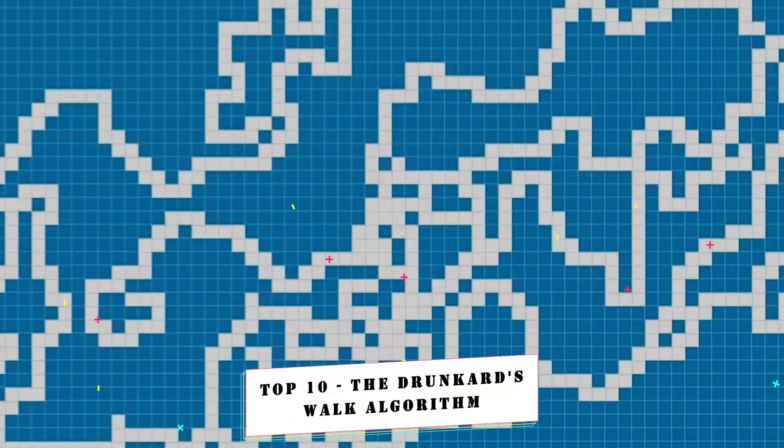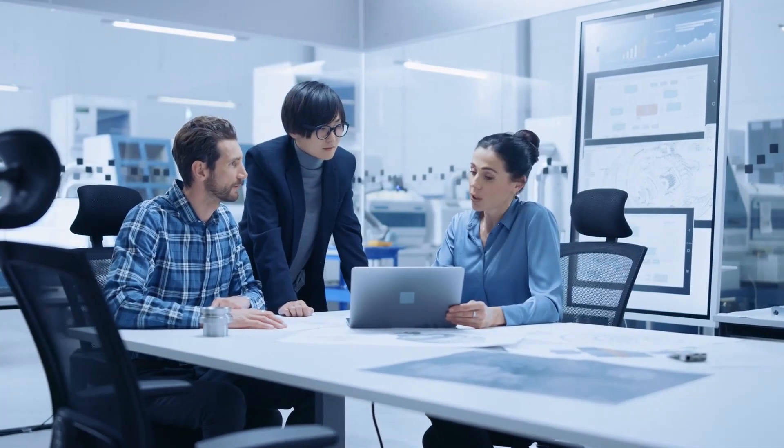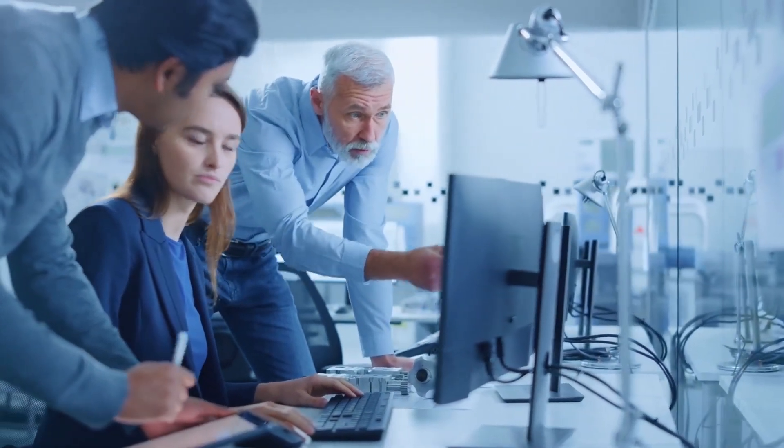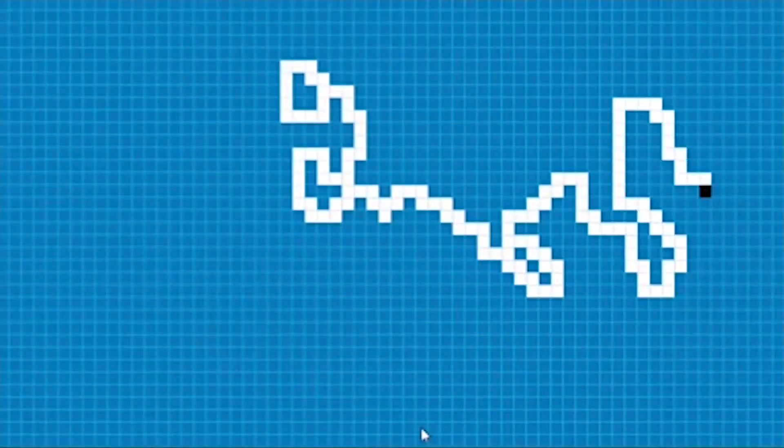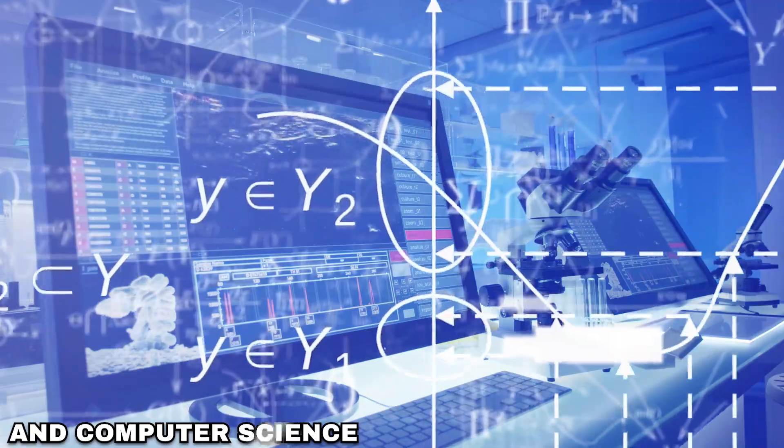Top 10. The Drunkard's Walk Algorithm. The Drunkard's Walk Algorithm takes a no-nonsense approach to problem-solving, inspired by the erratic steps of someone under the influence. Think of a barfly who is too drunk to walk a straight line. They take one stumbling step forward, then wildly to the left, sometimes two steps to the right, and then stumble back to where they started. It is the Drunkard's Walk Algorithm, a useful tool in mathematics and computer science.